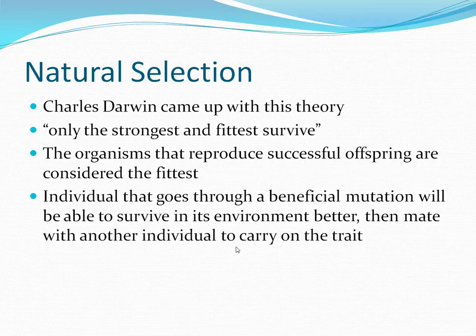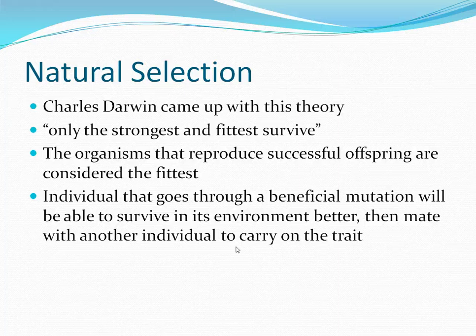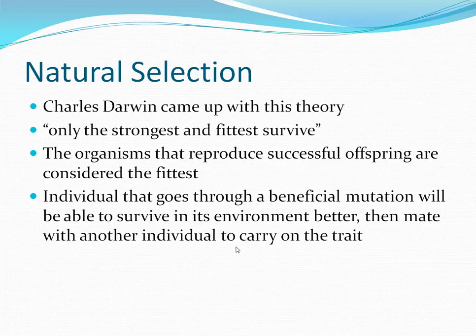In order for a species to get better or evolve, they obtain a beneficial mutation which helps them adapt better in their environment. When they mate with someone within their population, that mutation gets passed on to their offspring. The weaker ones will die off and the stronger ones with the better traits will remain.